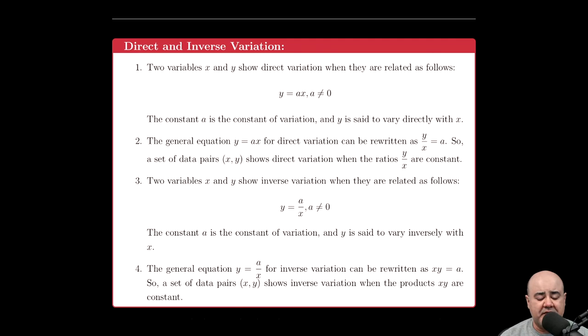Next, an introduction to inverse variation. We say that two variables—again, the name of the variable is immaterial—vary inversely, or show inverse variation, if the relationship is y = a/x. Again, a is not allowed to be zero because zero divided by a variable would just end up being zero. So a is called the constant of variation. And if this relationship is satisfied, then y is varying inversely with respect to x.